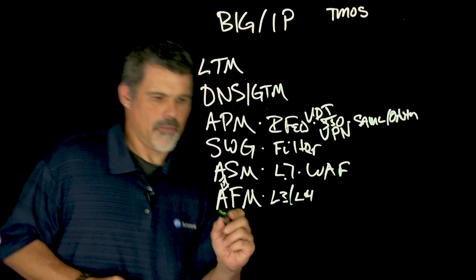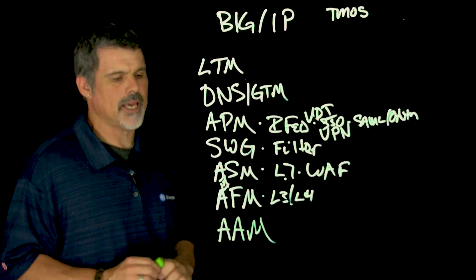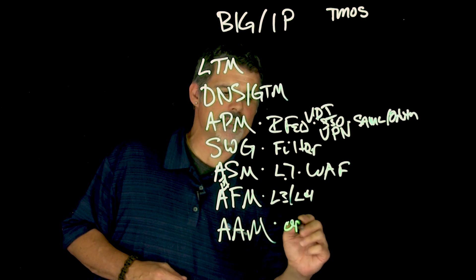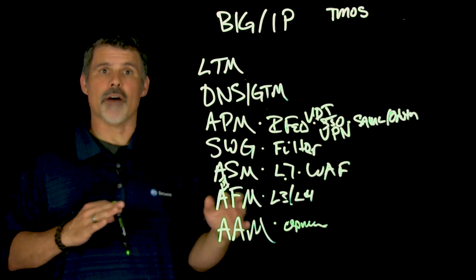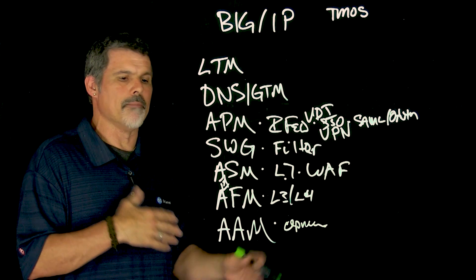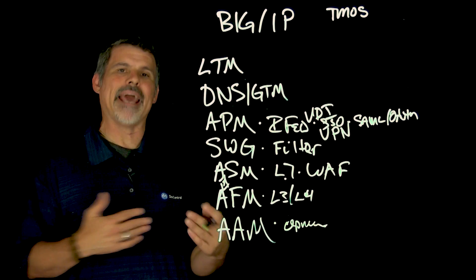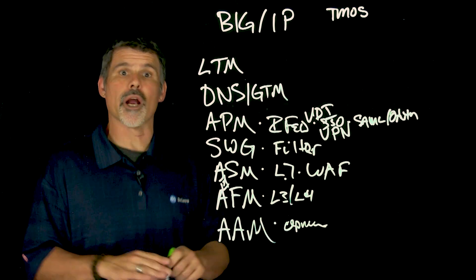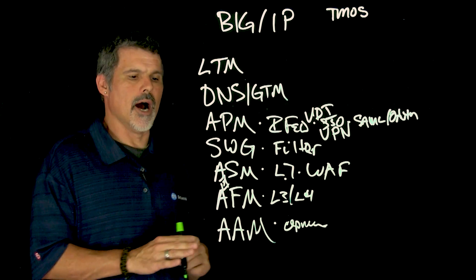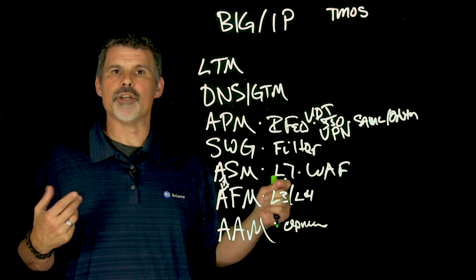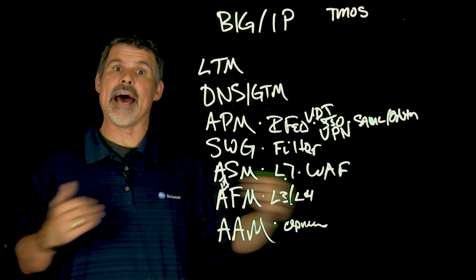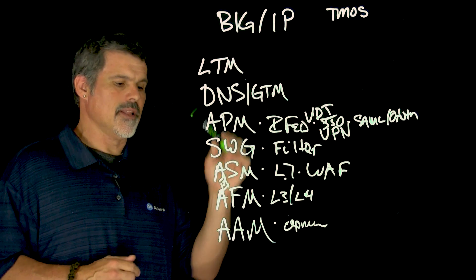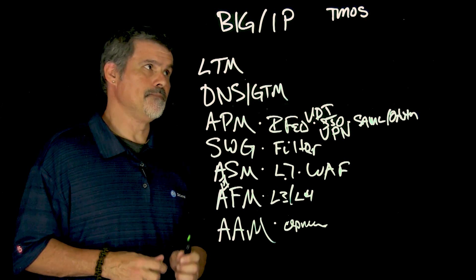Next is AAM, or Big IP Application Acceleration Manager. AAM does things like optimization using algorithms to manage your bandwidth appropriately — useful for lossy networks, high-latency networks, or connections coming from the other side of the world. It also helps with things like replicating a database from data center to data center, making that replication take much less time.